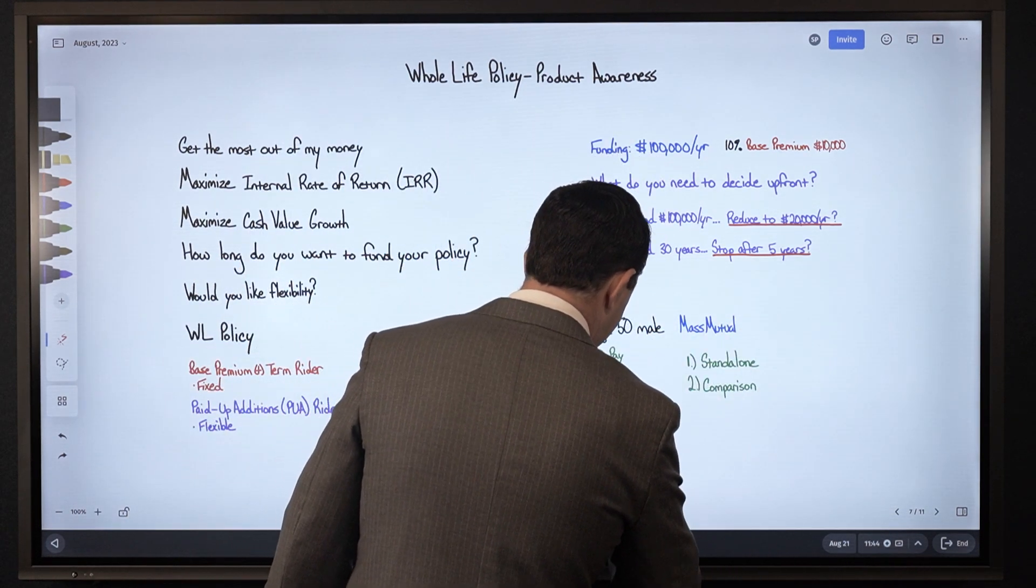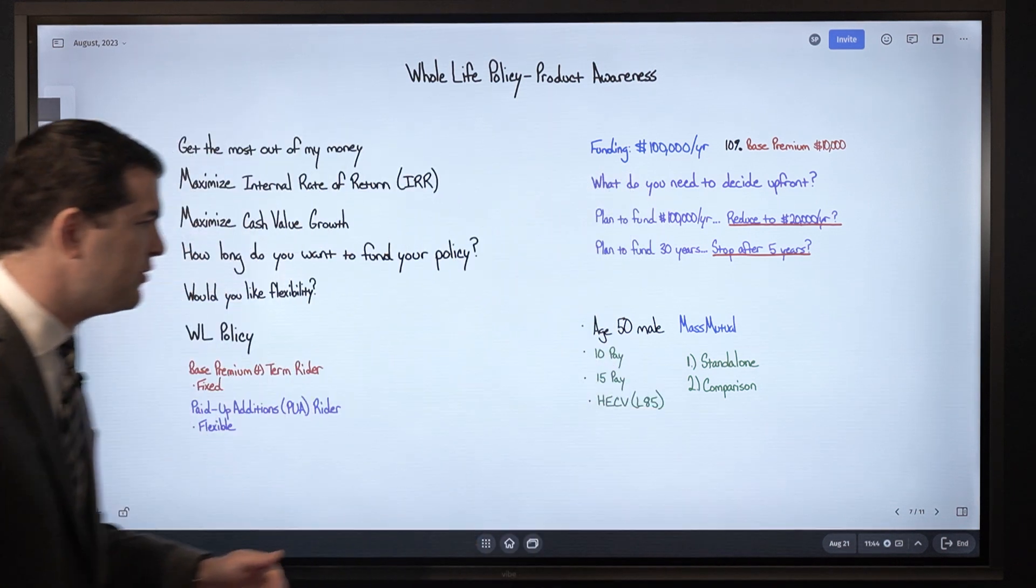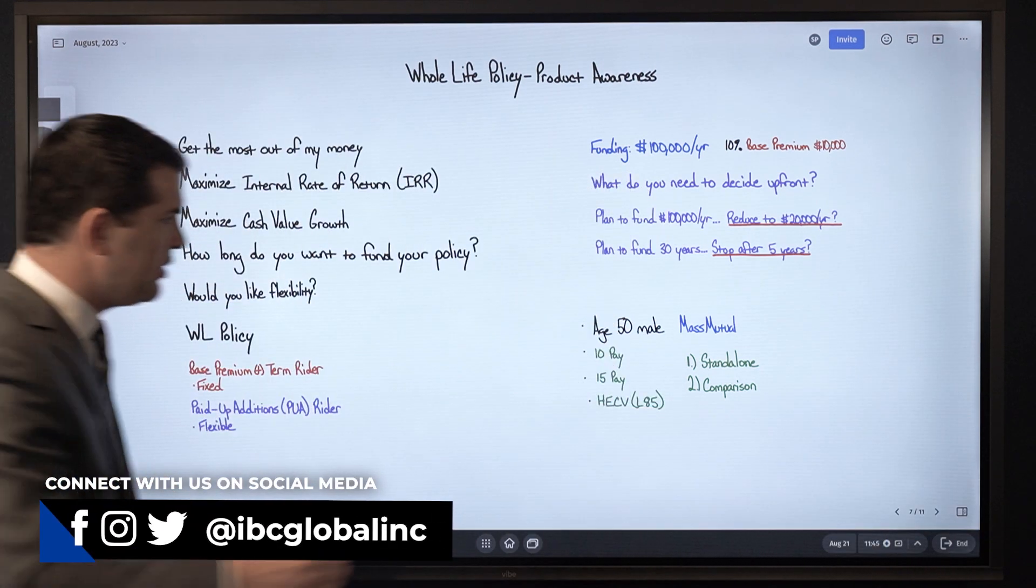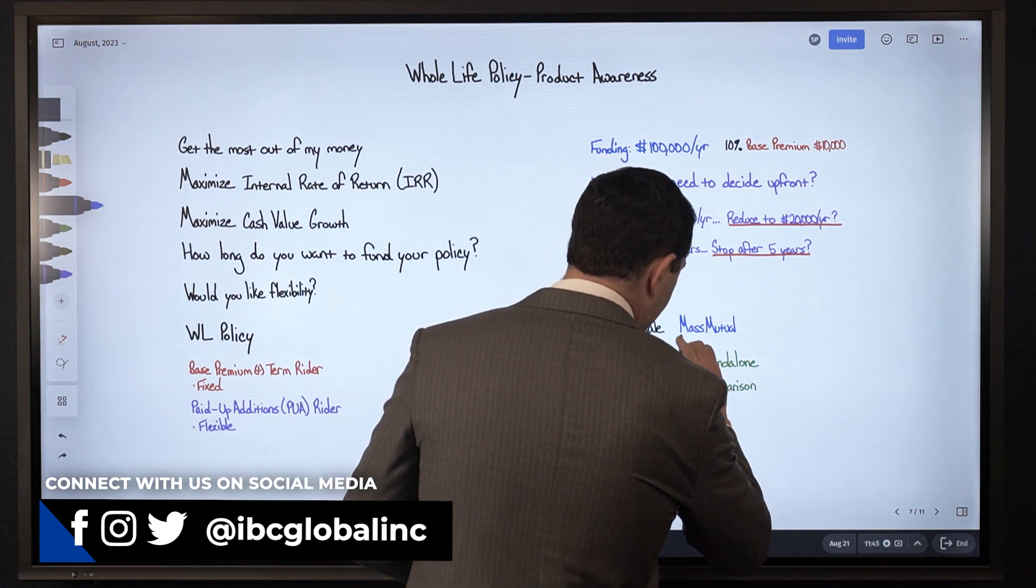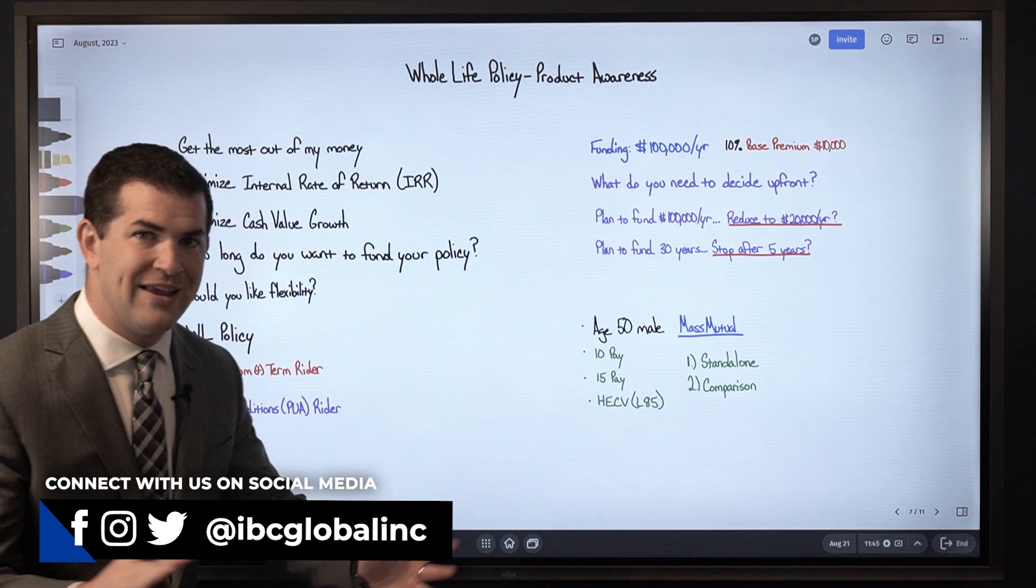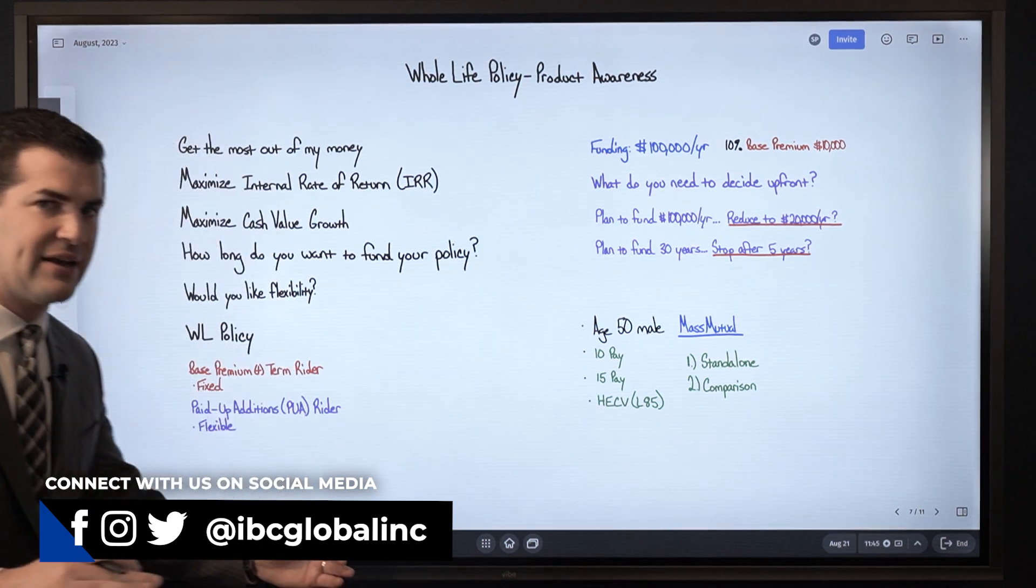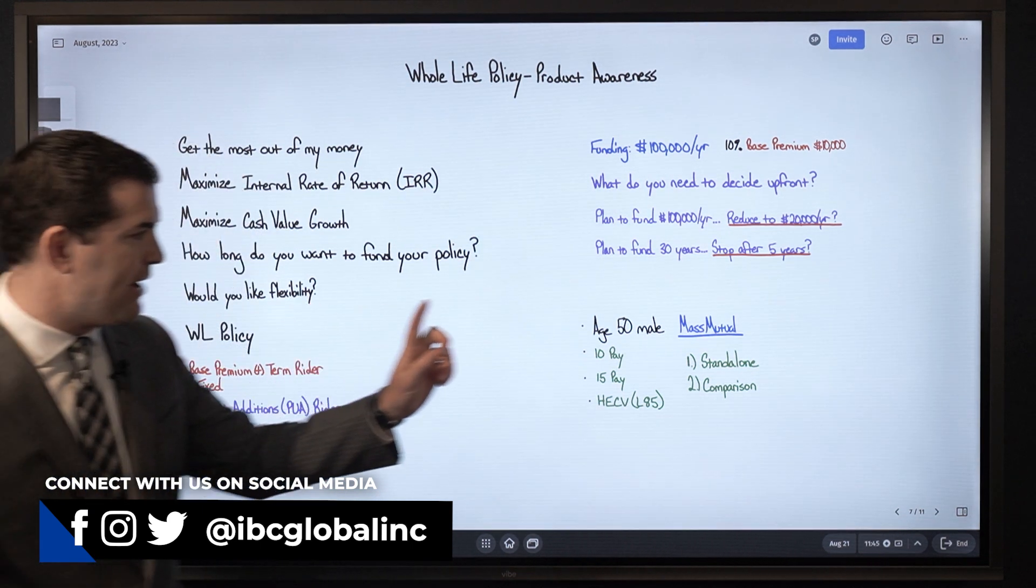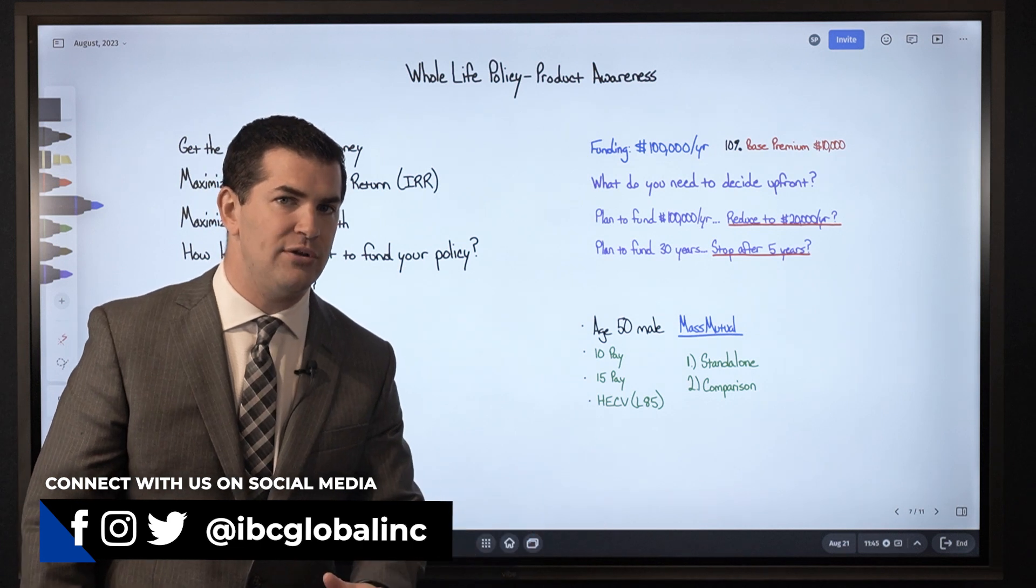15 pay, and HECV, our high early cash value policy. Now the thing about these, they're all products with MassMutual. So when I'm looking at these products, I've got the exact same company, the exact same dividend rate, yet when I look at them, I will see different results.